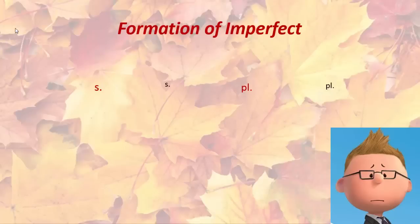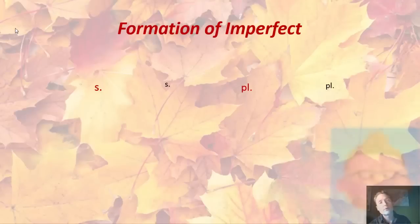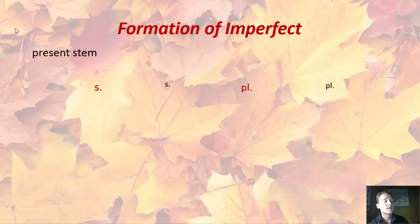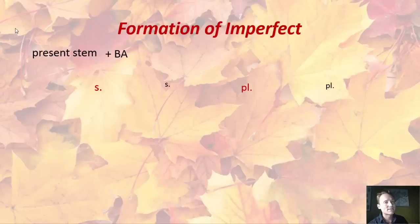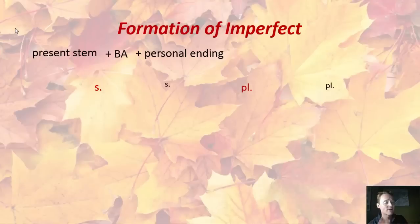Let's look at the formation of the imperfect. This is the formula I want you to write down, so I'm going through it slowly. We're going to take the present stem — this is just like a mathematical formula — and add to it an infix. This infix for the imperfect is the two letters BA. So: present stem plus BA, and then add the personal endings, most of which you already know. Present stem plus the infix BA plus personal endings — that's how you make the imperfect.